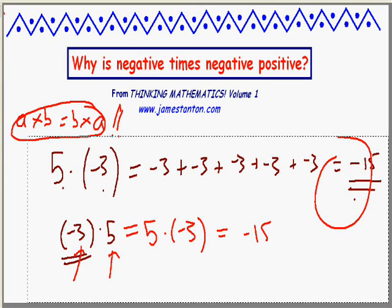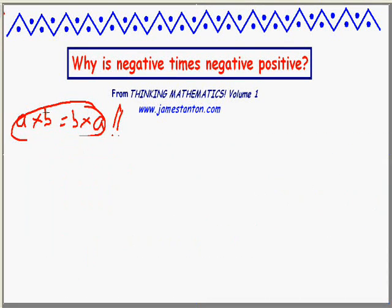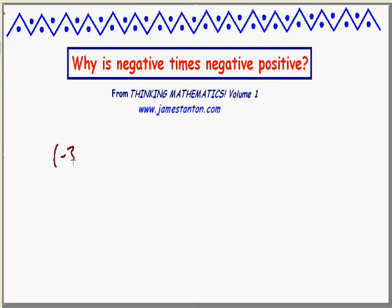Now comes the juicy one. Let's examine negative times negative. For example, let's look at negative 3 times negative 5. Well, even if I switch the order around and make this negative 5 times negative 3, I'm still stuck — I do not know what to assign to this.